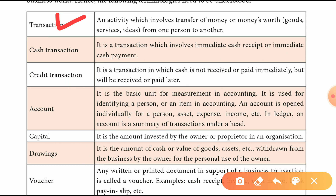The next one is Cash Transaction. A cash transaction involves immediate cash. Here is credit transaction — credit is also called a divide, meaning payment is claimed at a later date.